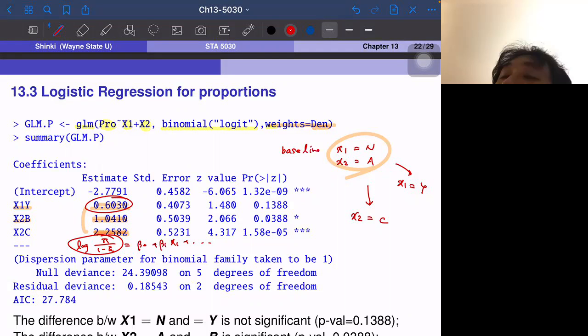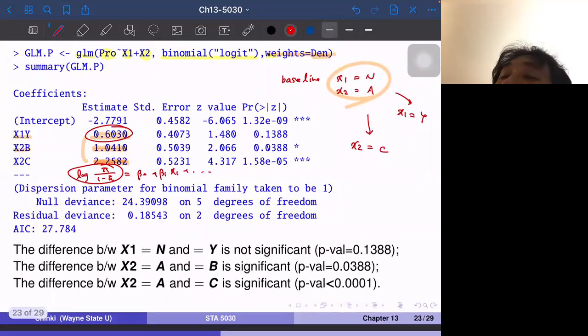But at least we can see the significance. So X1 equals Y is actually not significantly higher. X1 equals Y does not give the significantly higher success probability than X1 equals X. X2 value. If X2 value becomes B from A, then actually it's significantly higher success probability. And X2 equals C. So basically this compares B versus A and C versus A. If X2 equals C, it's much higher probability. It has much higher probability of success than X2 equals A. And you can interpret with P value.